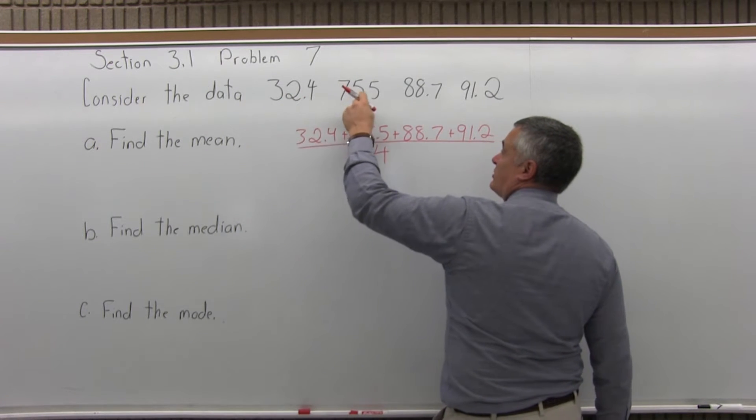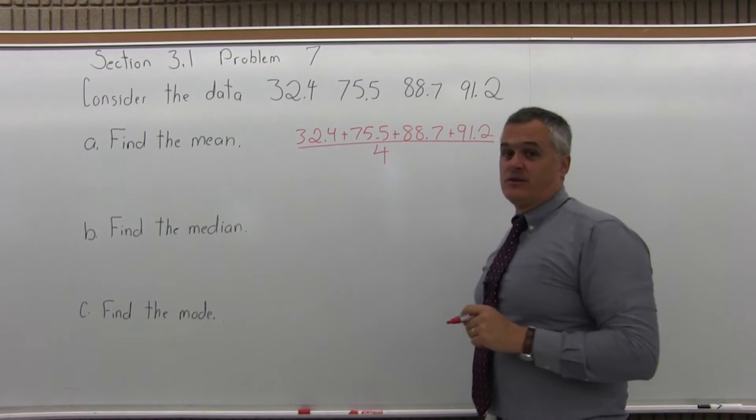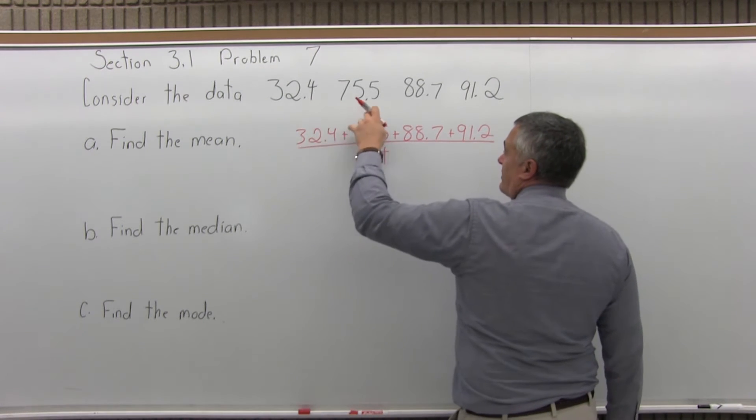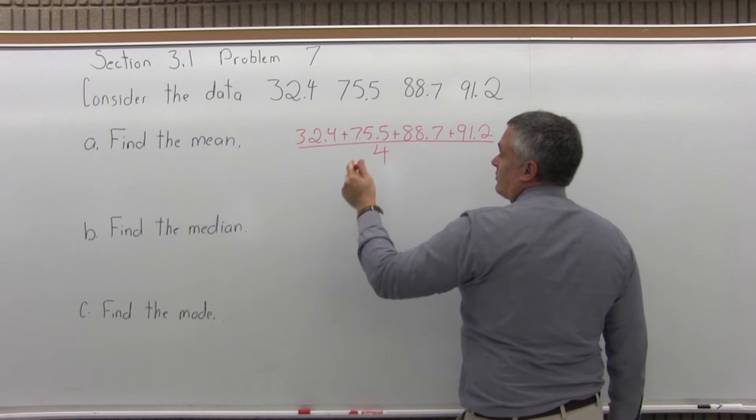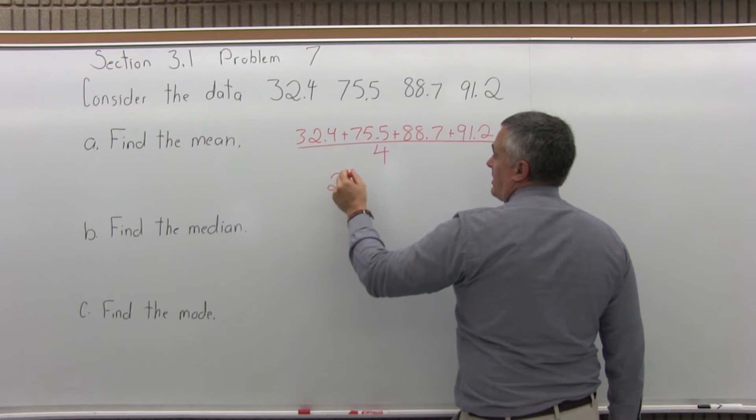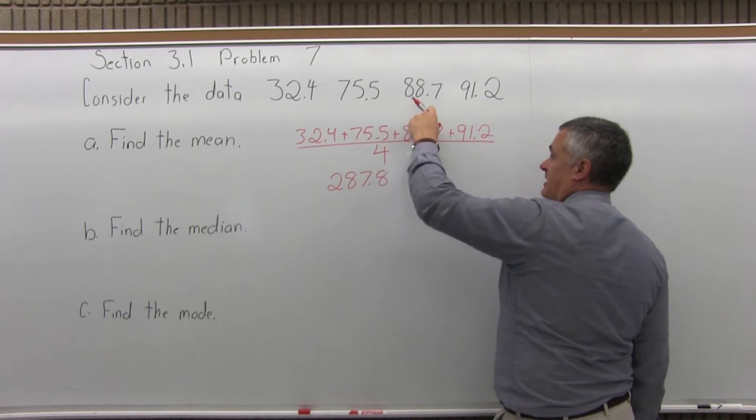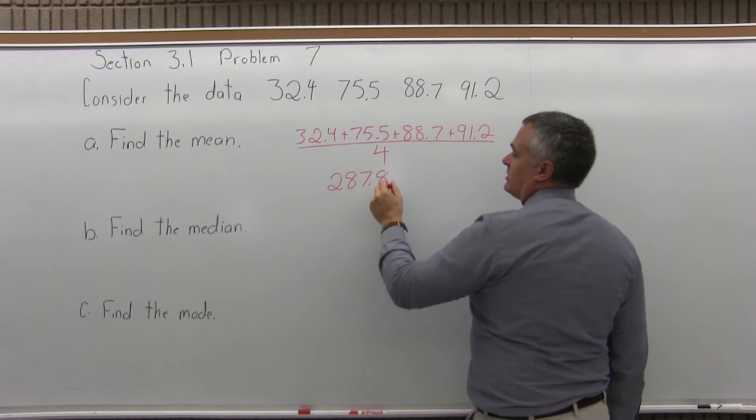4, because you have 1, 2, 3, 4 data values. So, you definitely want to use your calculator to get the total. If you add them up, it adds up to 287.8. That's a total of 32.4 plus 75.5 plus 88.7 plus 91.2.